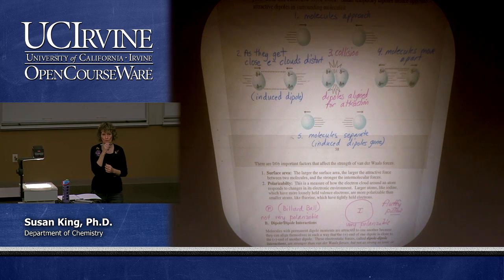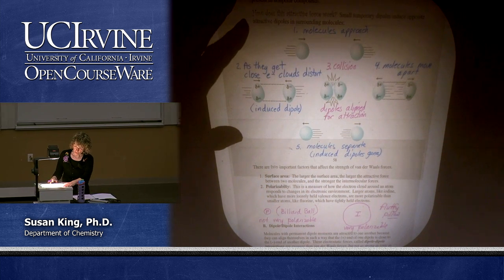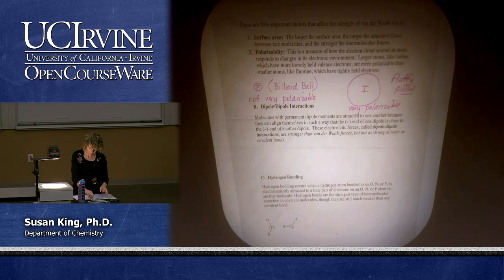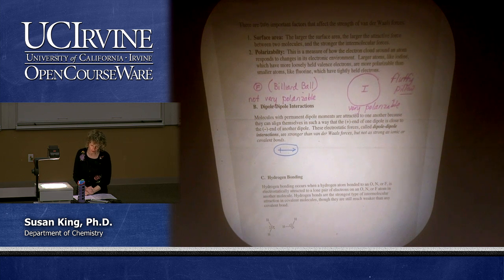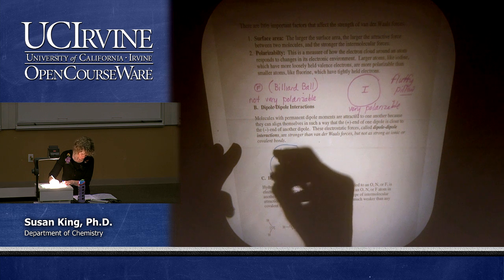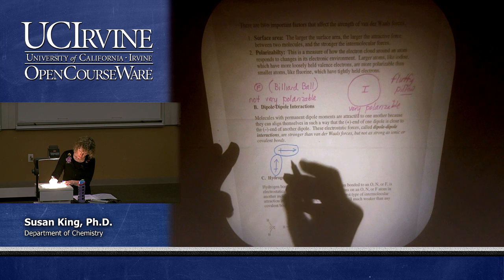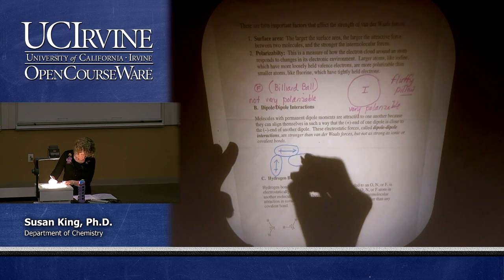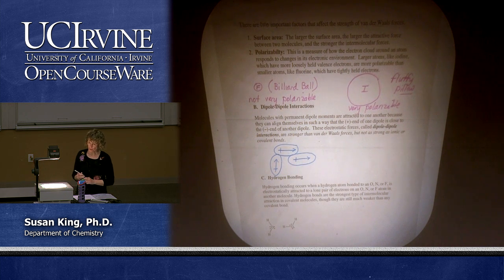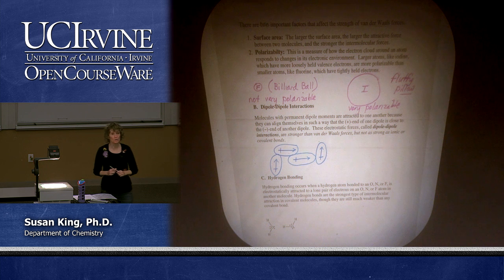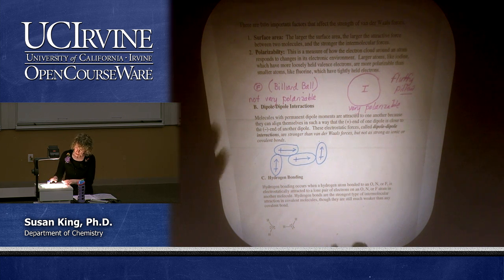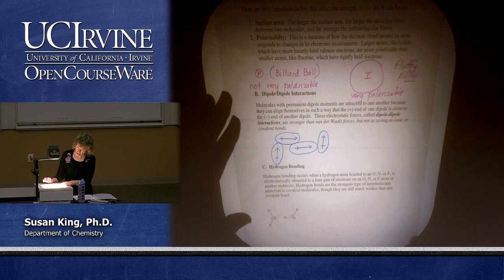Is there an example where the surface area is small but it has high polarizability? We're going to look at that coming up with some specific examples. Van der Waals forces also apply to dipole-dipole interactions — molecules with permanent dipoles. They line up so the permanent dipoles are aligned with positive next to negative. This is a stronger effect because these are not induced but permanent dipoles, so they're stronger than Van der Waals but not as strong as ionic or covalent bonds.